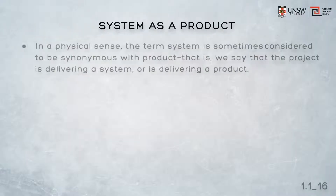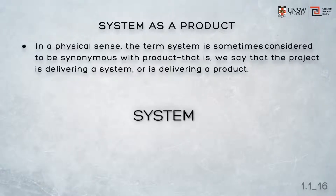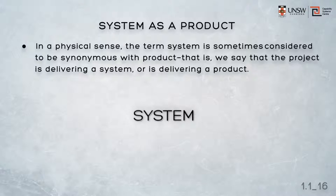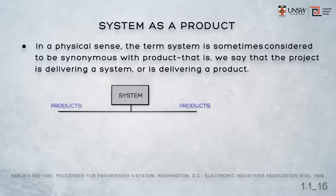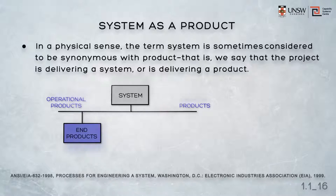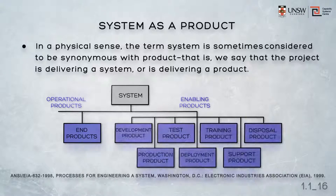In a physical sense, the term system is sometimes considered to be synonymous with product — that is, we say that the project is delivering a system, or it's delivering a product. A system, however, is normally considered to comprise a number of products. NCIA 632 sees the system as comprising operational products, or end products, and enabling products, such as test, training, and disposal products.